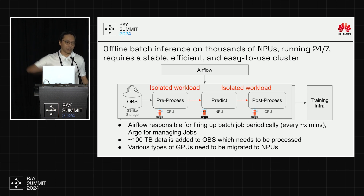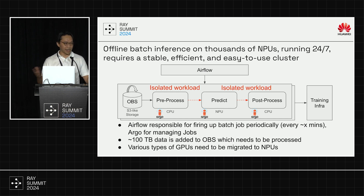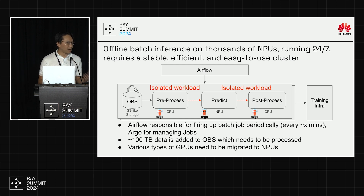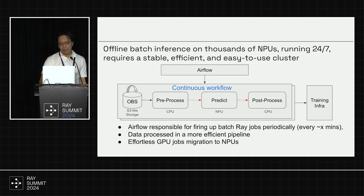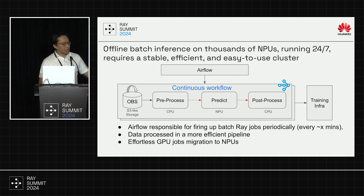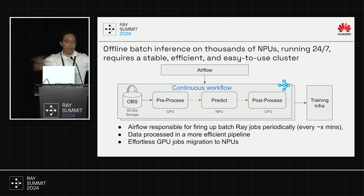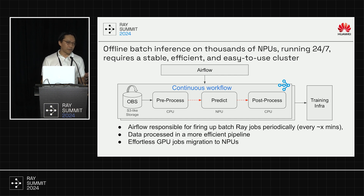The amount of data they were processing was increasing exponentially — 100 terabytes was from about a year ago — so they needed to scale their cluster. But the efficiency limitations of their setup prevented scaling. They also wanted to migrate some workloads from GPU to NPU without interrupting their business. With our Ray-based solution, the workflow became connected: Ray now manages both CPU and NPU clusters, with jobs still fired from Airflow but unified under Ray.